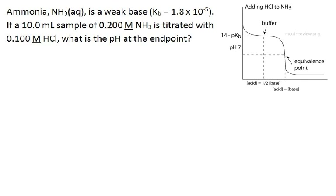Now we can do exactly the same kind of problem, but this time we'll work with a weak base. The weak base is ammonia, and we have a Kb for ammonia. We're going to titrate that with a strong acid, HCl. We could figure out the initial pH of the ammonia solution using an ICE box, and we'd get a buffer where pOH equals pKb. What we really want to know is the pH at the equivalence point. The equivalence point this time is going to be in the slightly acidic region because we're working with a strong acid and a weak base, so we expect our pH at the endpoint to be a little bit acidic.